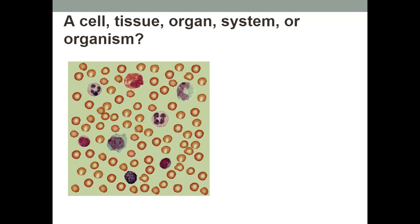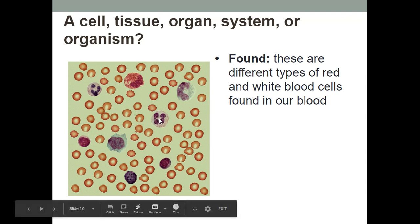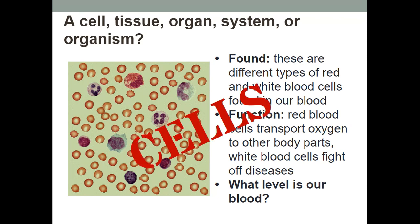Here's our last one. Red and white blood cells are found in the blood. You can see the white blood cells and the red blood cells. The red blood cells transport oxygen to other parts of the body, and the white blood cells fight off diseases. Is it a cell, tissue, organ, system, or organism? If you said cells, you are correct.